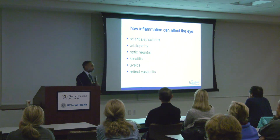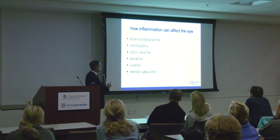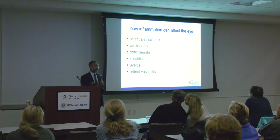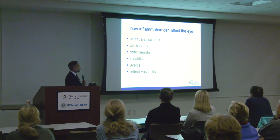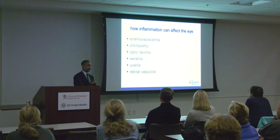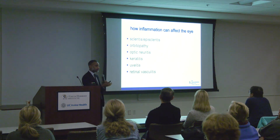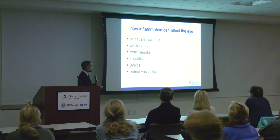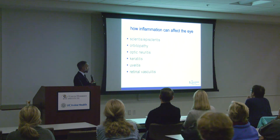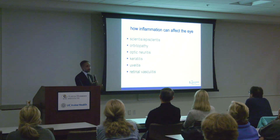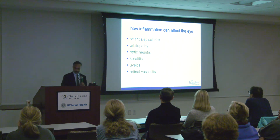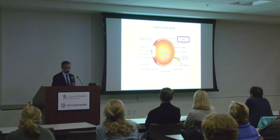Inflammation can affect the eye in a number of ways. One thing to think about is that anytime you put '-itis' behind a body part, it means inflammation of that body part — appendicitis is inflammation of your appendix. Scleritis is inflammation of the sclera, the outer white part of the eye. Keratitis — 'kera' means cornea. Retinal vasculitis — 'vascus' means vessel — so inflammation of the blood vessels in the retina. We'll go over these individually.